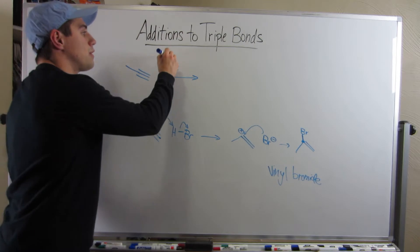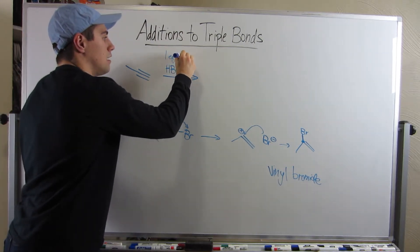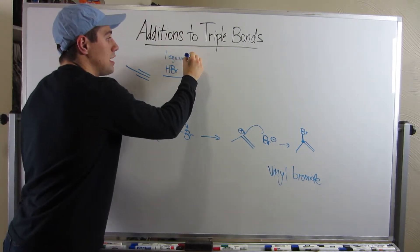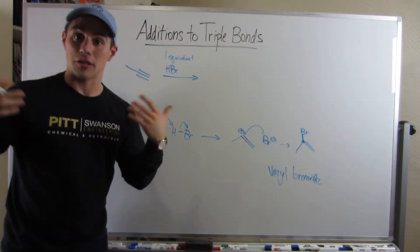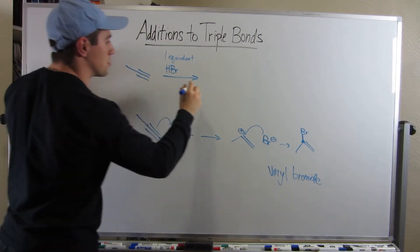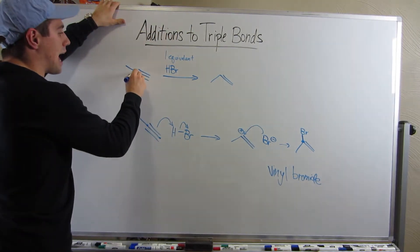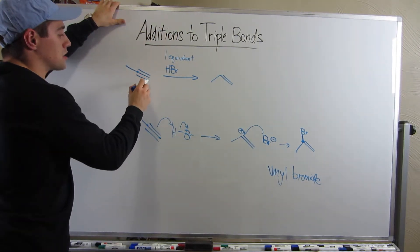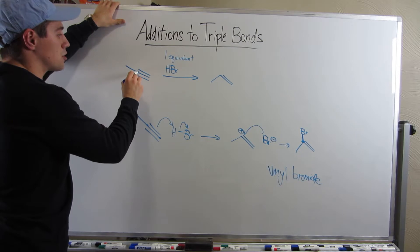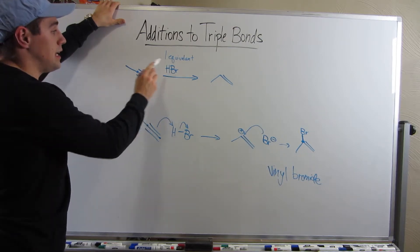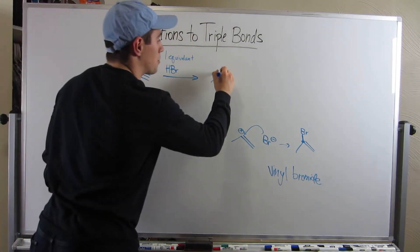So that would be if we had one equivalent of HBr. The Markovnikov addition goes exactly the way you'd expect: three carbons in a row, the bromine adds here because first we protonate the triple bond, the positive charge goes on the more substituted carbon, then we add the halogen where it should go. This would be our product.